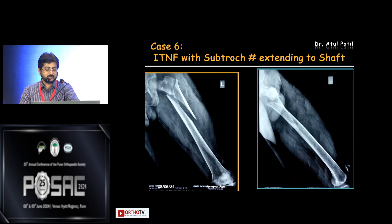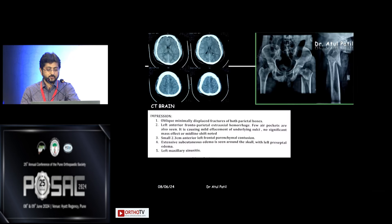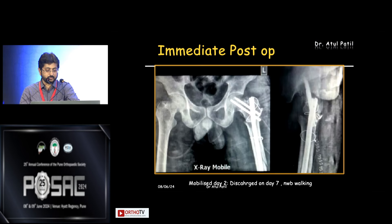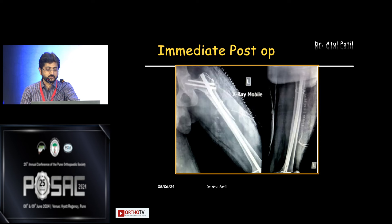Another case: long spiral subtrochanteric with intertrochanteric fracture. When closed reduction is not possible, open reduction should be planned. This patient also had a subdural hematoma. The lateral wall was managed with cerclage wire, the subtrochanteric component fixed with cerclage wire and a long nail (TAN nail). Immediate post-op showed staples confirming open reduction.